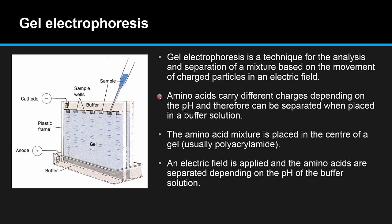Amino acids carry different charges depending on the pH, and therefore can be separated when placed in a buffer solution. The pH of this buffer solution will determine the charge on the amino acid. The amino acid mixture is placed in the centre of a gel, and an electric field is applied. The amino acids are separated depending on the pH of the buffer solution.